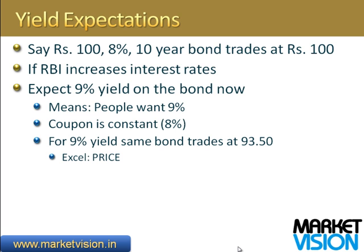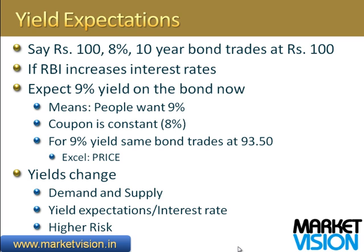That difference is huge because there are 10 years left. As you get closer and closer to expiry, the same 1% change will lead to a smaller change in price. In Excel, the formula to find out what price a bond would trade at for a different yield is called PRICE. Yields change in the market based on demand and supply — high demand for a bond with limited supply means people are willing to pay more, which reduces the yield automatically. People also change yield expectations based on risk profile. Government bonds are very secure, but certain corporates may go bankrupt. So people say that's risky, I want more yield — and I'm going to pay a much lower price. The same bond I'd pay 90 rupees for as a government bond, I may pay only 70 rupees for as a corporate bond.